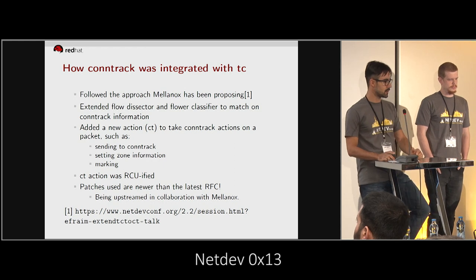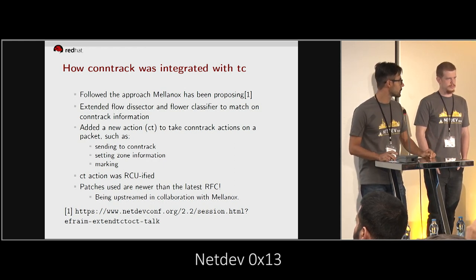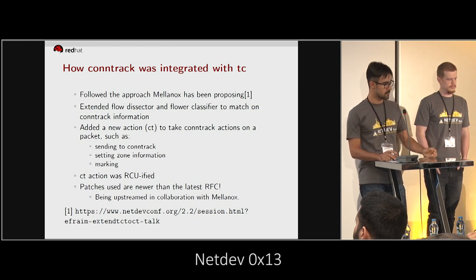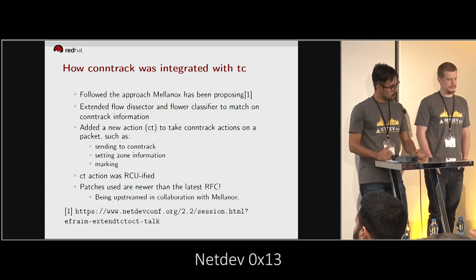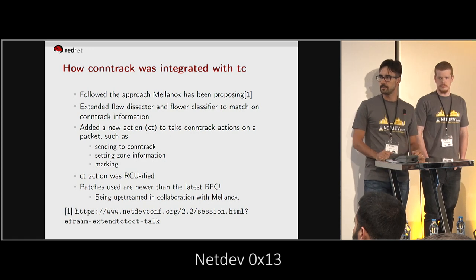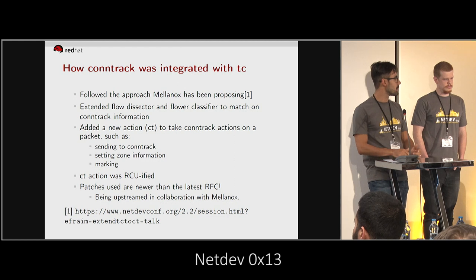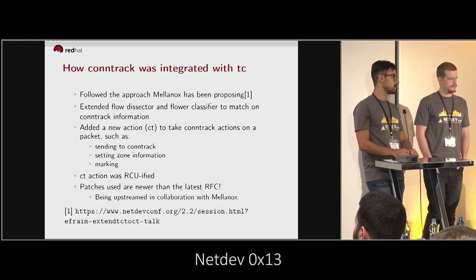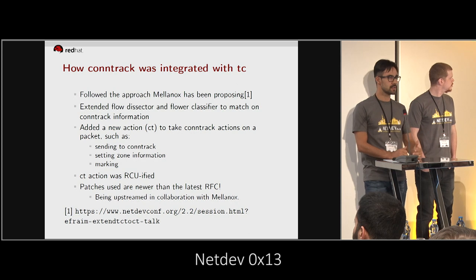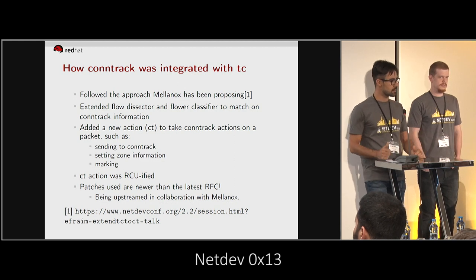How was it integrated with TC? We followed the approach that Mellanox has been proposing for the past conferences — there is a link for the paper that is really the base of the implementation that we did. We extended flood sector and the flower classifier to match on conntrack information. So when you ask flower to match on conntrack state 'established,' the flood sector will be able to reference the NFCT pointer on SKB and check for the state information and match based on that.